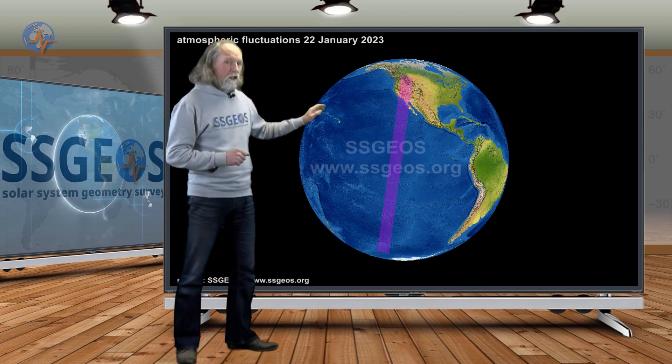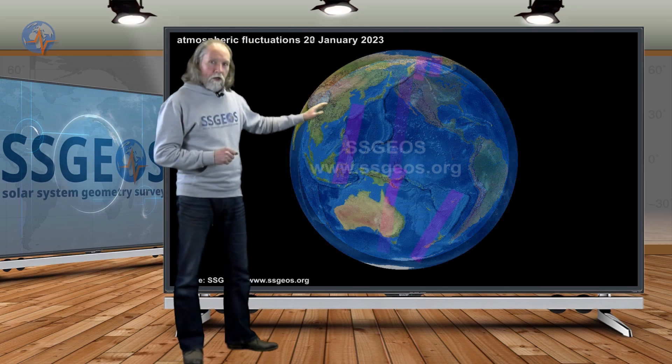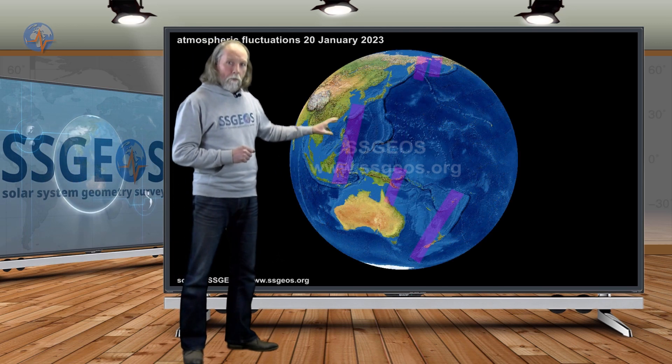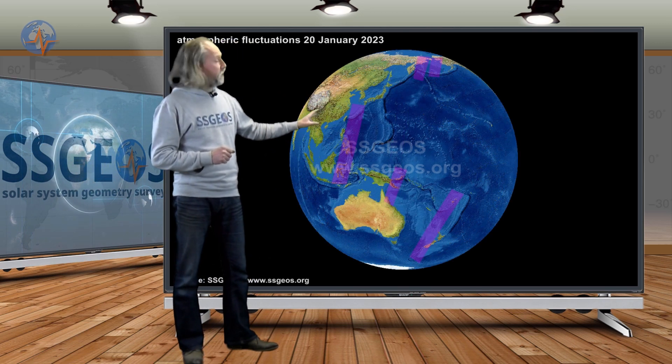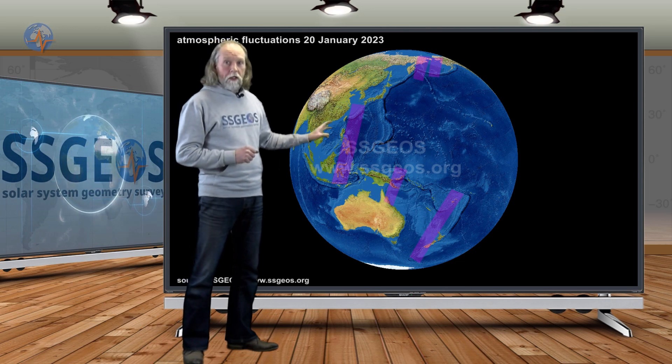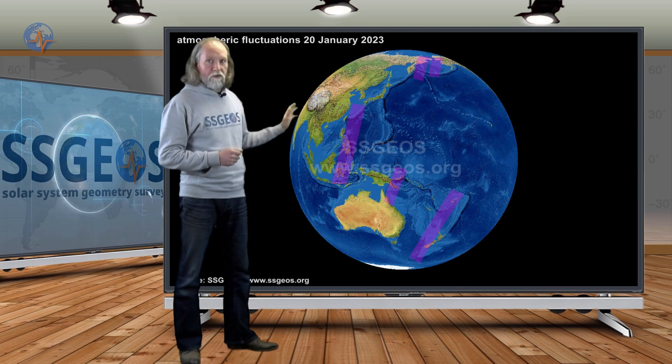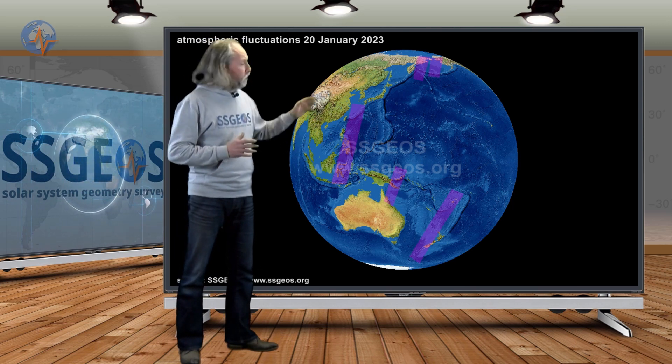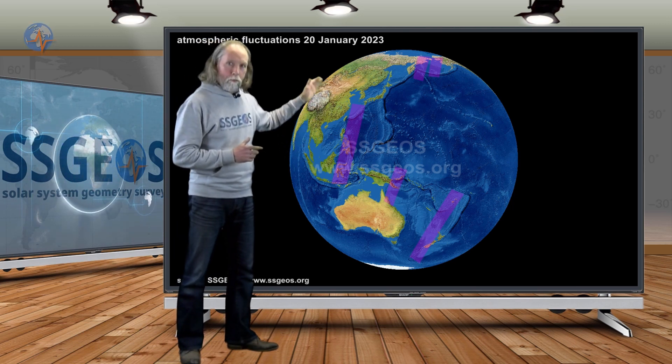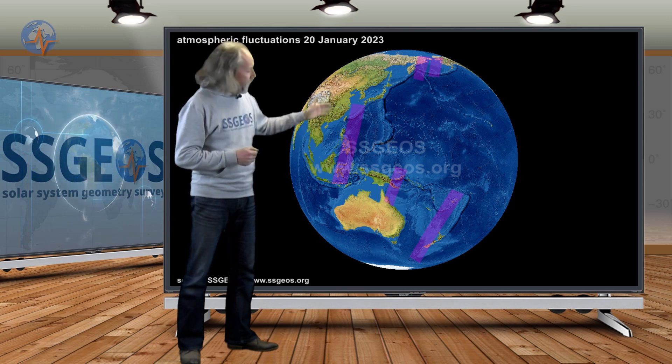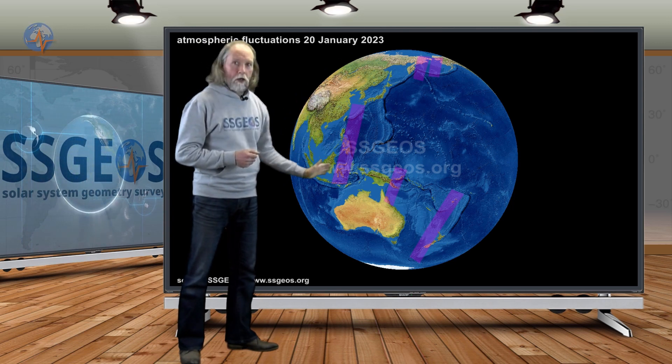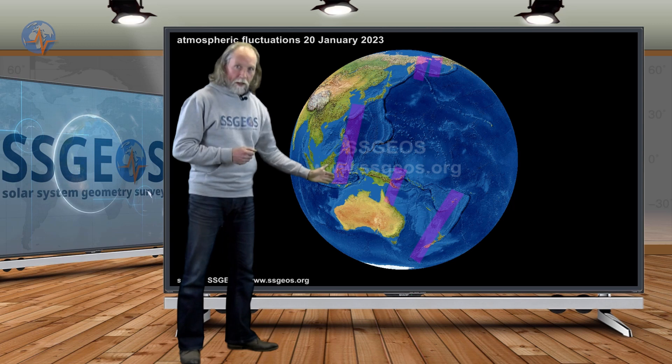The seismic activity that we had this morning, the six pointer at Kermadec, matches the atmospheric fluctuations that we had on the 20th. You may recall from the previous update that we had some fluctuations over the West Pacific over several hours, so I couldn't really draw a single purple band, but the most eastern part really goes along the Kermadec trench.